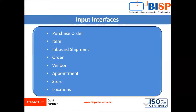We have some input interfaces in Oracle WMS Cloud. Input interfaces in WMS Cloud include: purchase order, items, items facility-specific, item barcode, item feedback, inbound shipment, orders, vendor or supplier, appointments, stores, locations, routes, price labeling information, ship-to company, site, and assets.